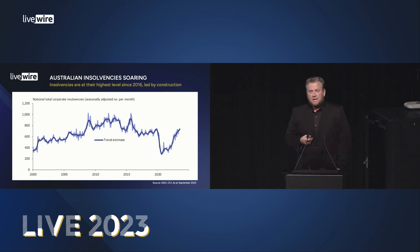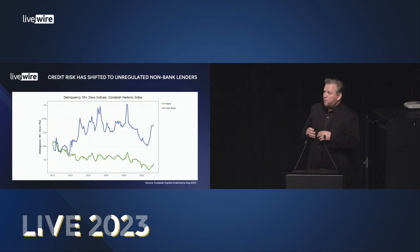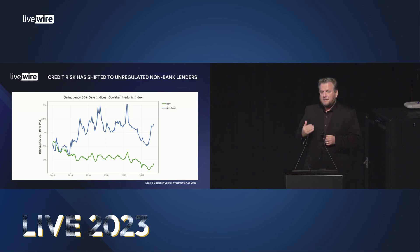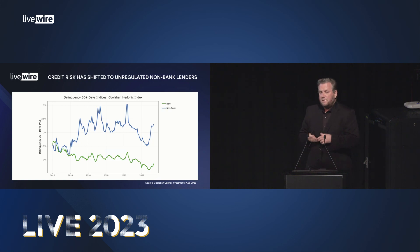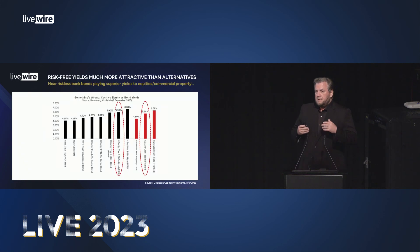Here in Australia we're seeing a huge increase in insolvencies, already back to 2016 levels. This has been driven by commercial real estate, construction, and residential property developers — the key sectors focused on by non-bank lenders. Looking at home loan delinquencies, non-bank home loan delinquencies have seen a massive increase in arrears, while bank delinquencies show very little increase. This betrays the fact that a great deal of credit risk shifted out of the banking system after the 2008 crisis and went into the non-bank market — the non-banks are holding most of the credit risk.